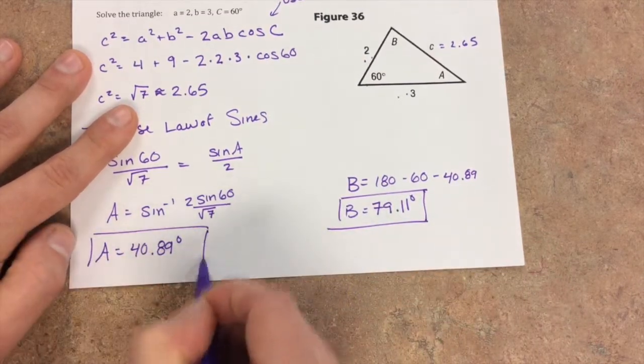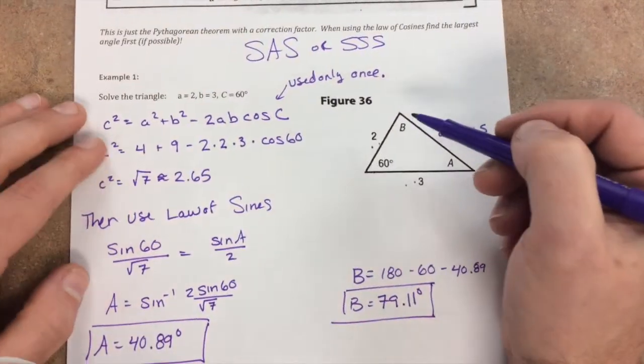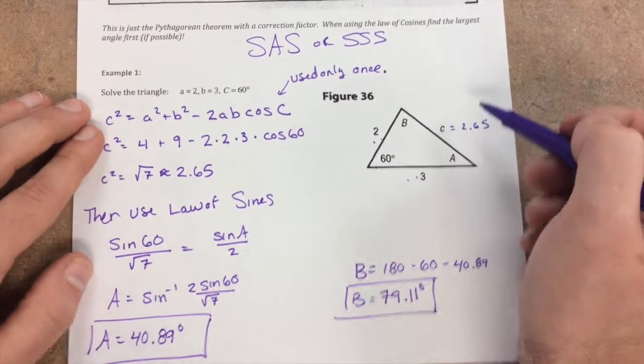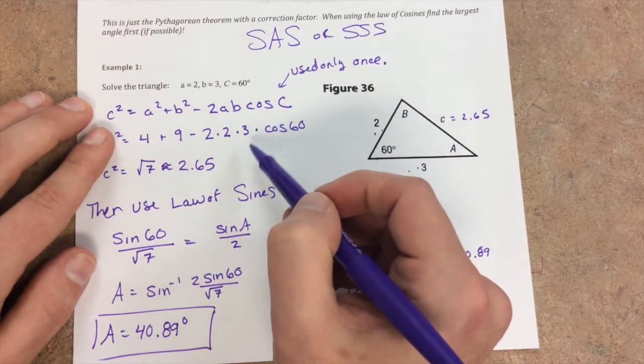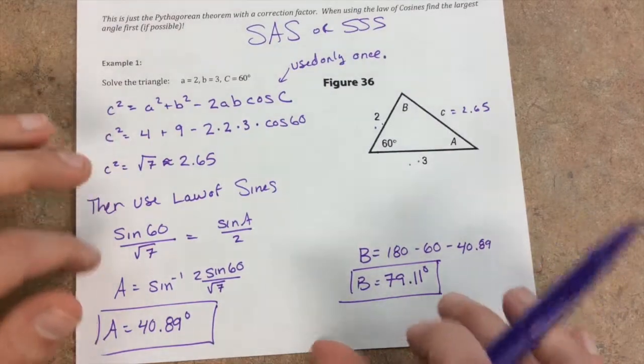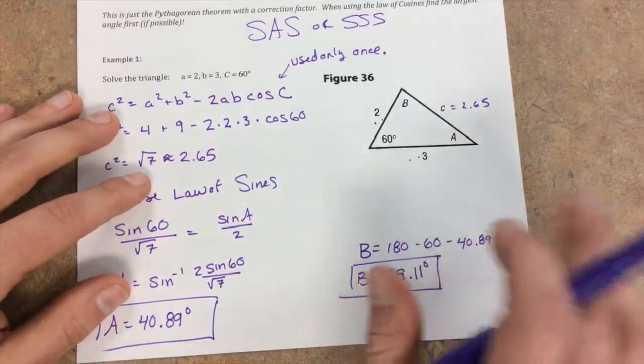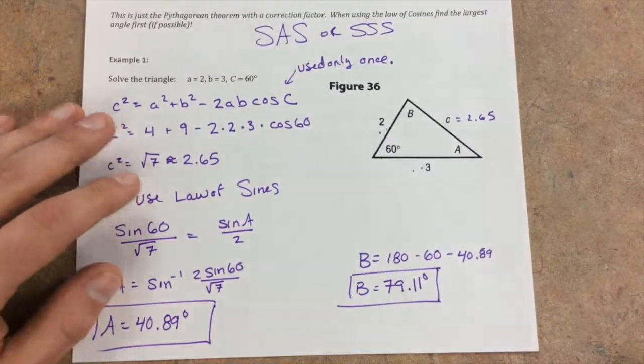Just to recap, we find our missing side using the law of cosines. Then we're going to use the law of sines or our information about right triangles to find everything else.